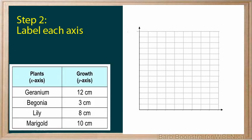The information that we are going to graph is about the growth of plants. This table shows the data. Label the x-axis with the title Plants, and the y-axis, growth. If the data has a unit, like centimeters, be sure to make that part of the label.